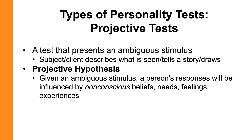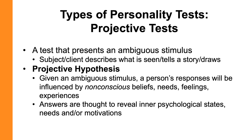The projective hypothesis is basically the idea that whenever a person is given an ambiguous stimulus to describe, draw, or tell a story about, their response is going to be influenced by their non-conscious beliefs, needs, feelings, and experiences — basically, their personality is going to come out in their answer. It was originally thought to be a way to get at what a person's personality is really like and get past problems like response biases such as social desirability. Answers to any projective item are thought to reveal inner psychological states — the person's personality, their needs (which Henry Murray called their implicit motives), and their motivations.